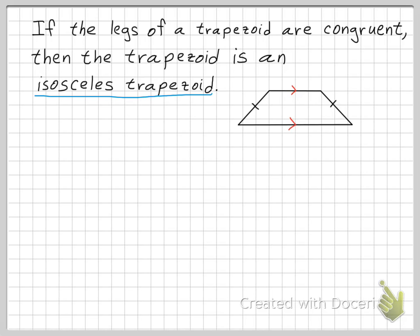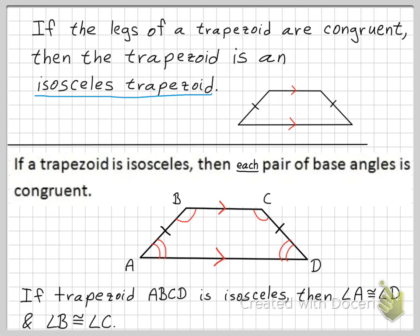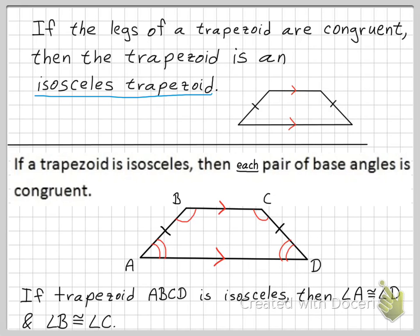Here's your first theorem: if a trapezoid is isosceles, then each pair of base angles is congruent. In trapezoid ABCD, it's isosceles because one leg is congruent with the other. Therefore, angle A is congruent with angle D, and angle B is congruent with angle C. Each pair of base angles will be congruent to each other.